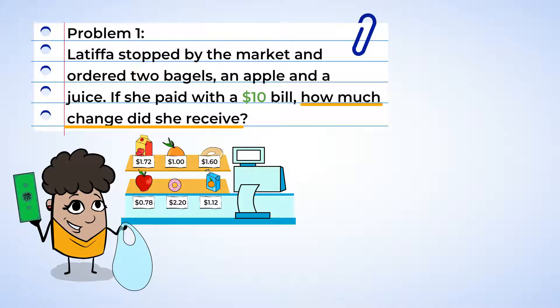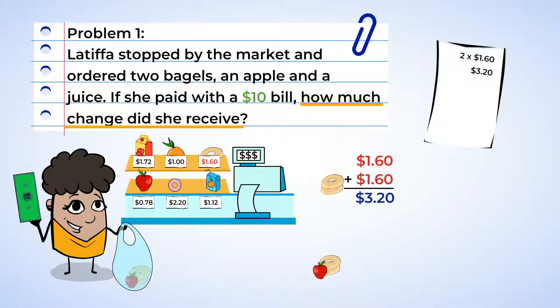First, let's look at what Latifah bought and how much money it'll cost. She bought two bagels, and each one cost $1.60. So we need to add $1.60 plus $1.60. She spent $3.20 on bagels. Next, she purchased an apple, which cost $0.78. And $3.20 plus $0.78 is $3.98.